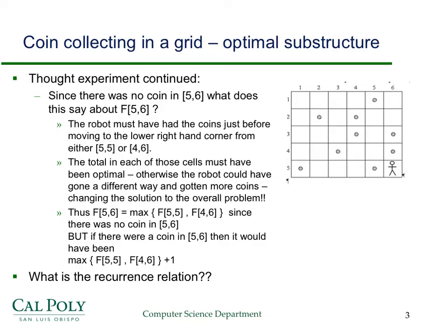The robot had to come from 5-5 or 4-6, and the total in each of those cells must have been optimal — otherwise, just like in other applications of dynamic programming, the optimal substructure says the robot could have gone a different way and gotten more coins, changing the overall solution. So F(5,6) must be the max of F(5,5) and F(4,6). And if there had been a coin in 5-6, the robot would have picked it up, so we'd add 1 to whatever value we got from 5-5 or 4-6.